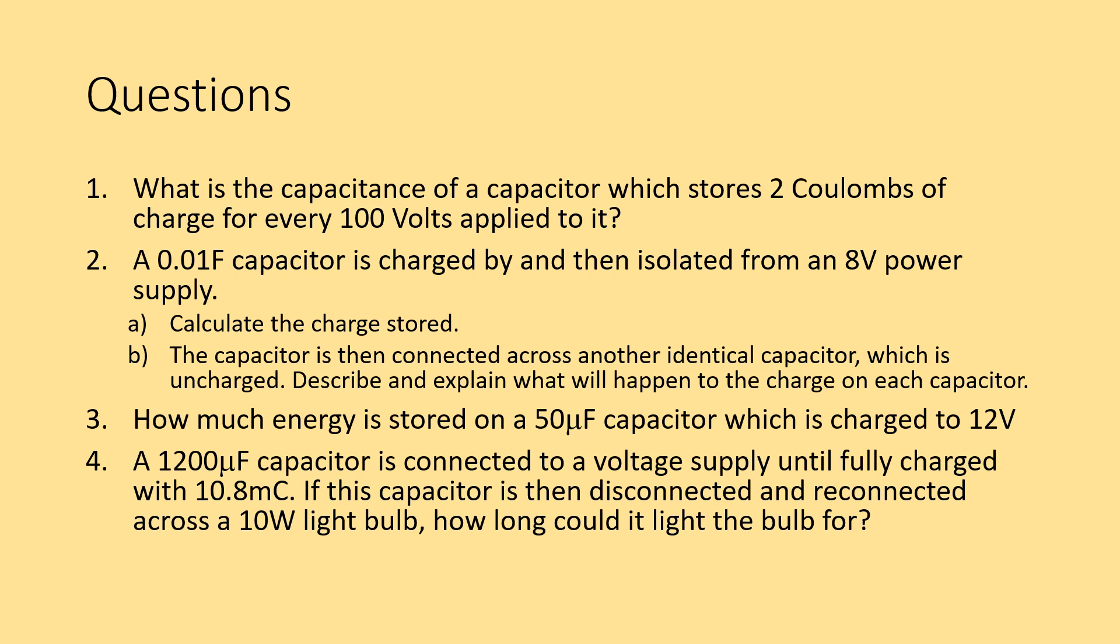A 0.01 farad capacitor is charged by, and then isolated from, an 8 volt power supply. This is quite normal. You would see questions in the exam where you would have a capacitor, normally with a two-way switch, which can either be off or switch to position A, where a capacitor will be charged by a power supply. And then, when it's switched to position B, it can then discharge through a different part of the circuit. The switch will then isolate it from the power supply. Calculate the charge stored. Then, if you connect this capacitor across another identical capacitor, which is uncharged, describe and explain what will happen to the charge on each capacitor. Really think about what's happening with the charges on those capacitors.